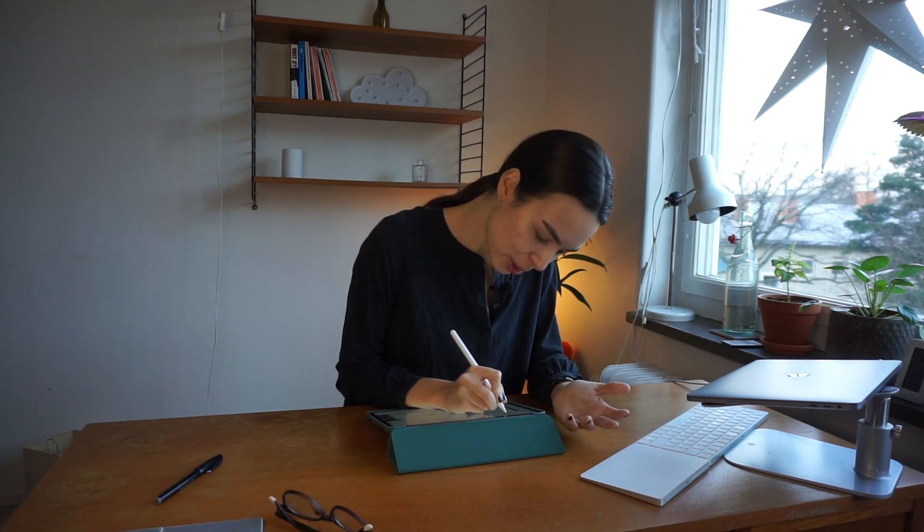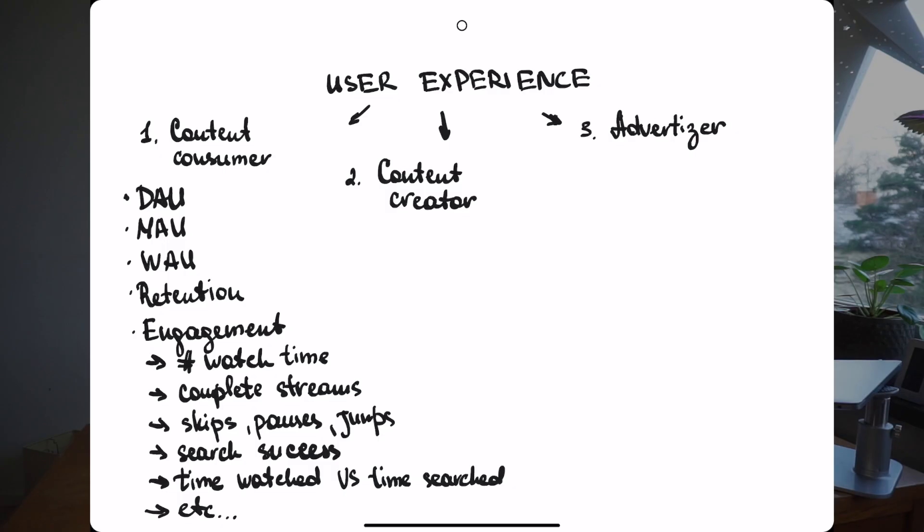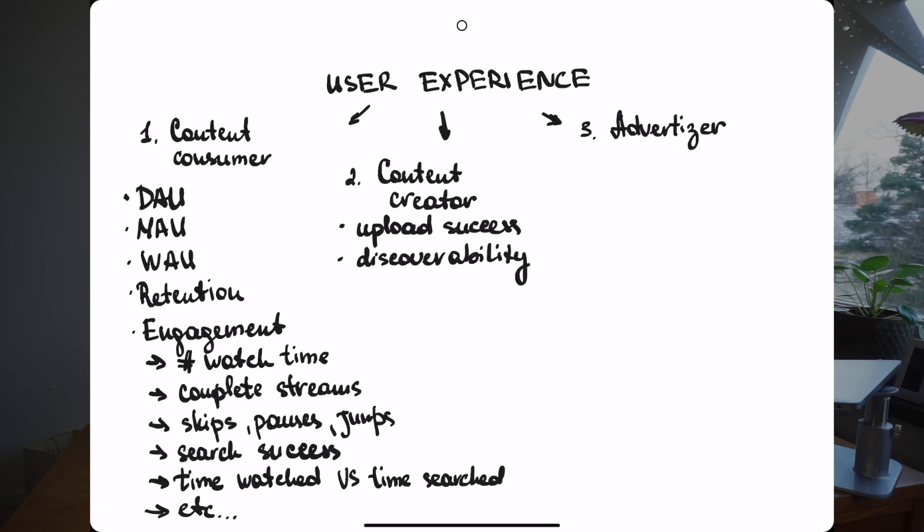Coming back to our user experience KPI map — looking at content creators. It's really important to have a nice way of understanding the performance of videos. You should be able to clearly upload the video, write a description, write tags, make it findable, searchable, and relevant — feeding into the algorithm that determines whether your video will be shown in watch later, watch next, or search results. Video upload shouldn't take a long time as that also feeds into the user experience.